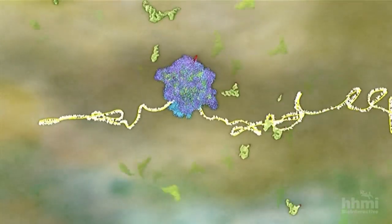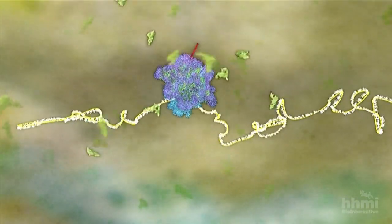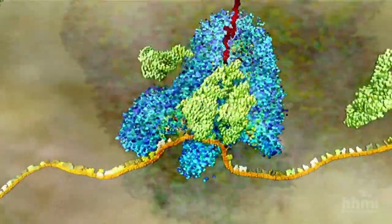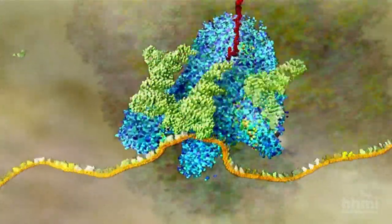The mRNA is also ratcheted on three nucleotides or one codon. Thirdly, the spent tRNA is moved to the E-site and then ejected from the ribosome to be recycled.